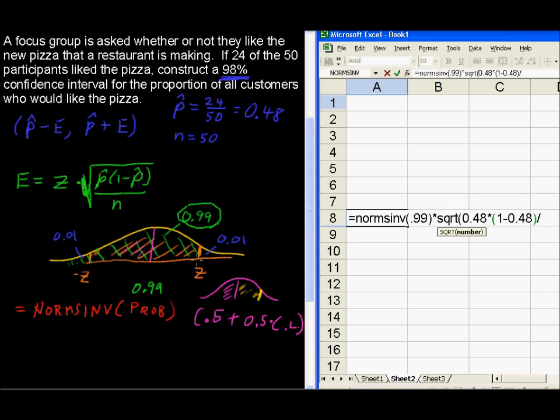Divided by, now we need, divided by n, which is the sample size. And we have 50 for the sample size. Okay, so again, we've got the z right here, and then the rest of the equation for the margin of error. There it is, 0.16.